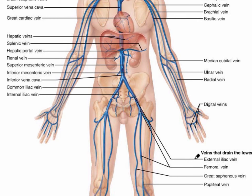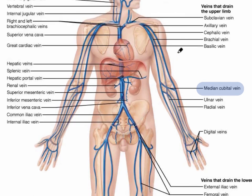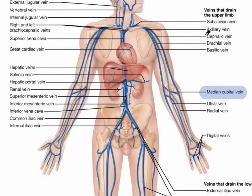However, there are some exceptions. There is a median cubital vein in the elbow area — that's where blood is usually drawn from — and there's no median cubital artery. Also, there's a cephalic vein with no cephalic artery, and a basilic vein with no basilic artery.